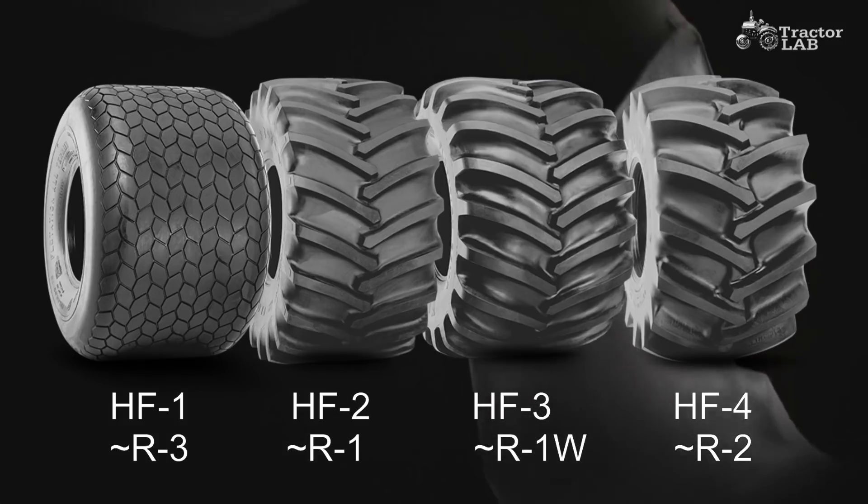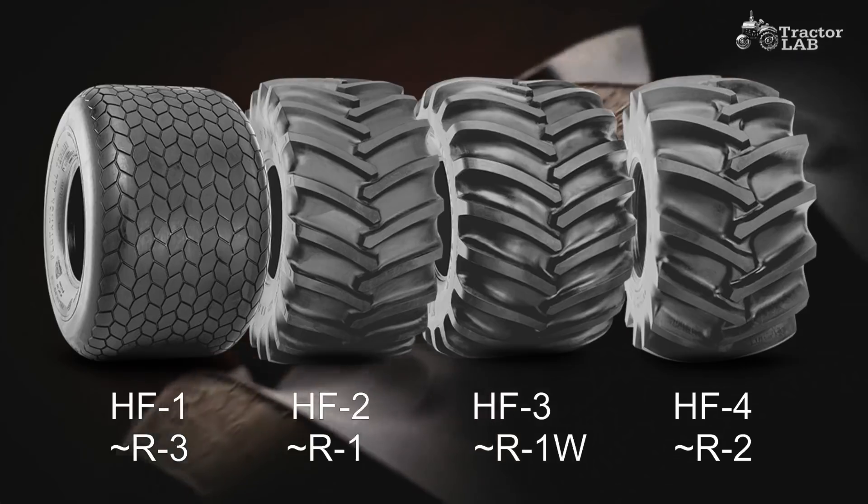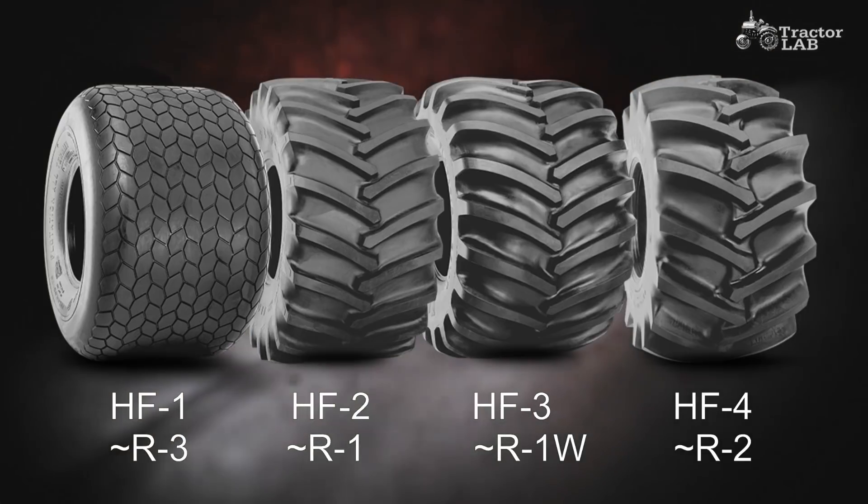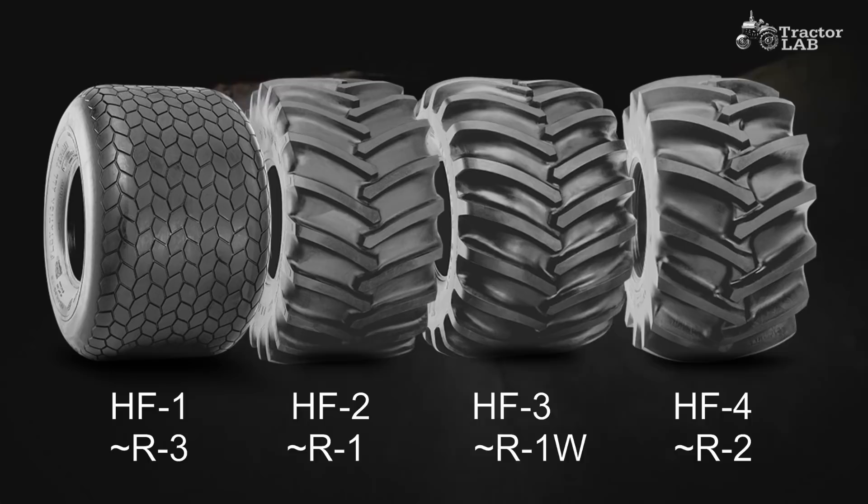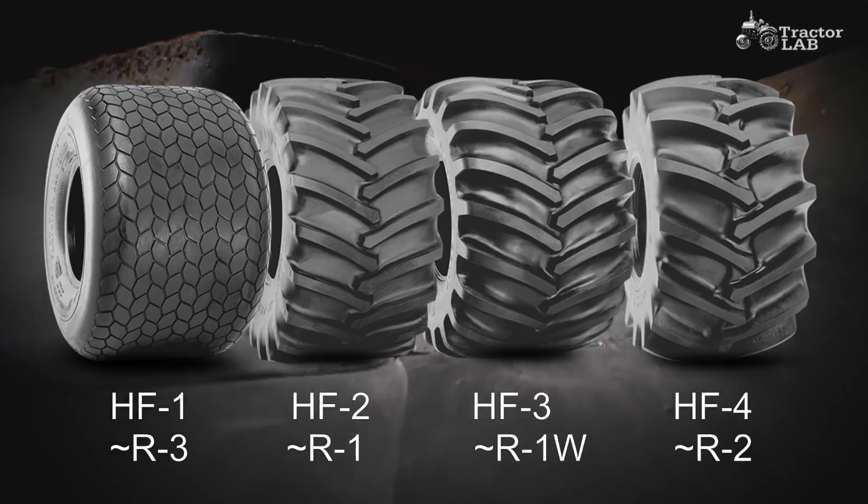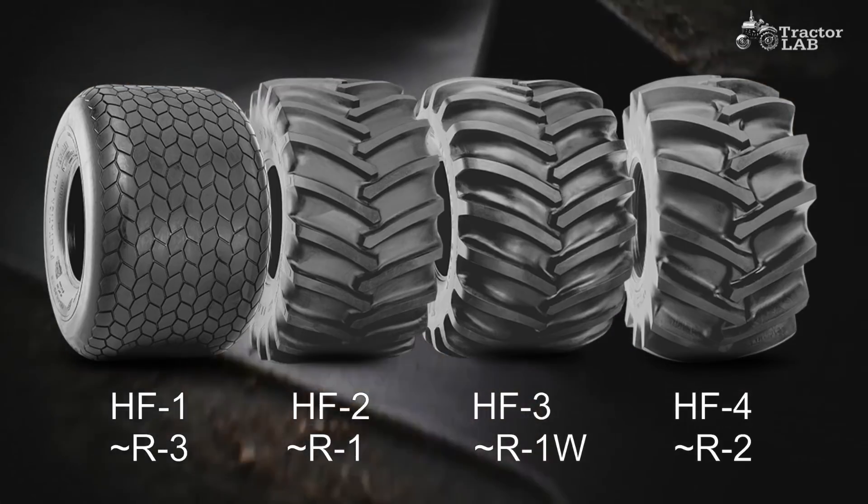Tread depth is the biggest factor affecting traction in wet soils, but as the soil dries out, deep lugs turn from assets to liabilities. In soil conditions most prevalent in North America, an R1 tire will pull better than an R1W.